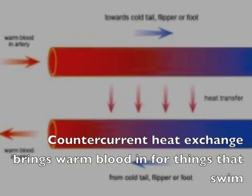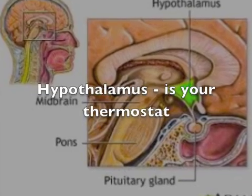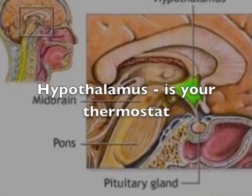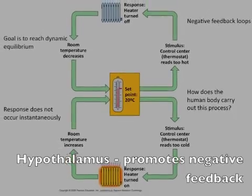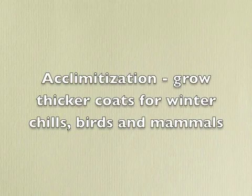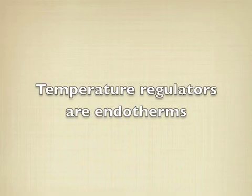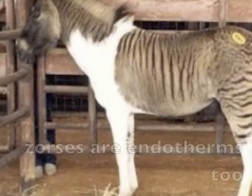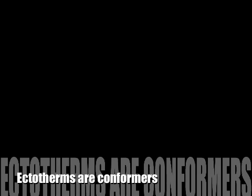Thermogenesis — endotherms burn brown fat. The hypothalamus is your thermostat. The hypothalamus promotes negative feedback. Acclimatization — grow thicker coats. Birds and mammals are homeotherms — temperature regulators. Mammals and other homeotherms maintain temperature; ectotherms are conformers.